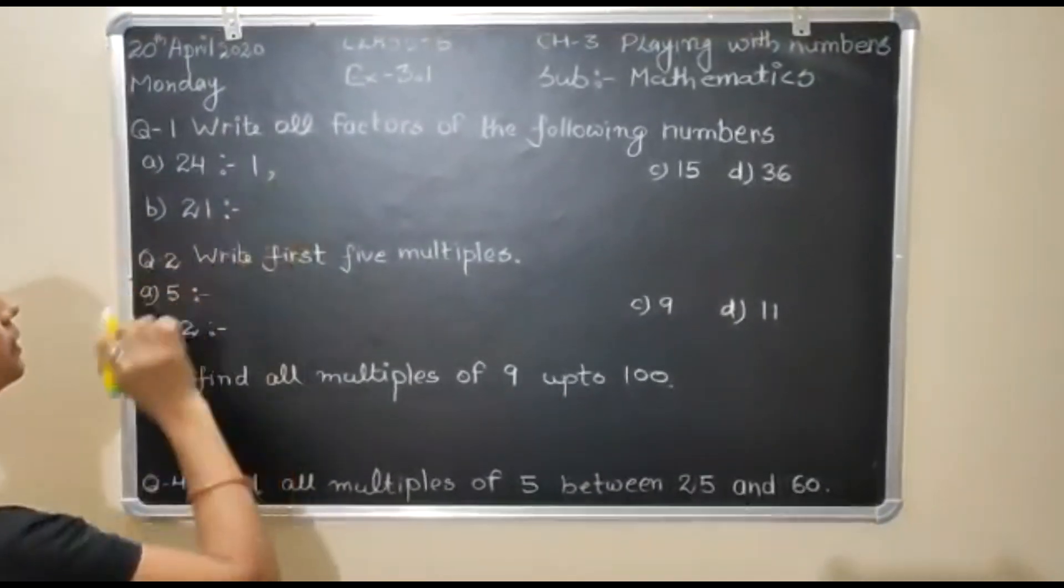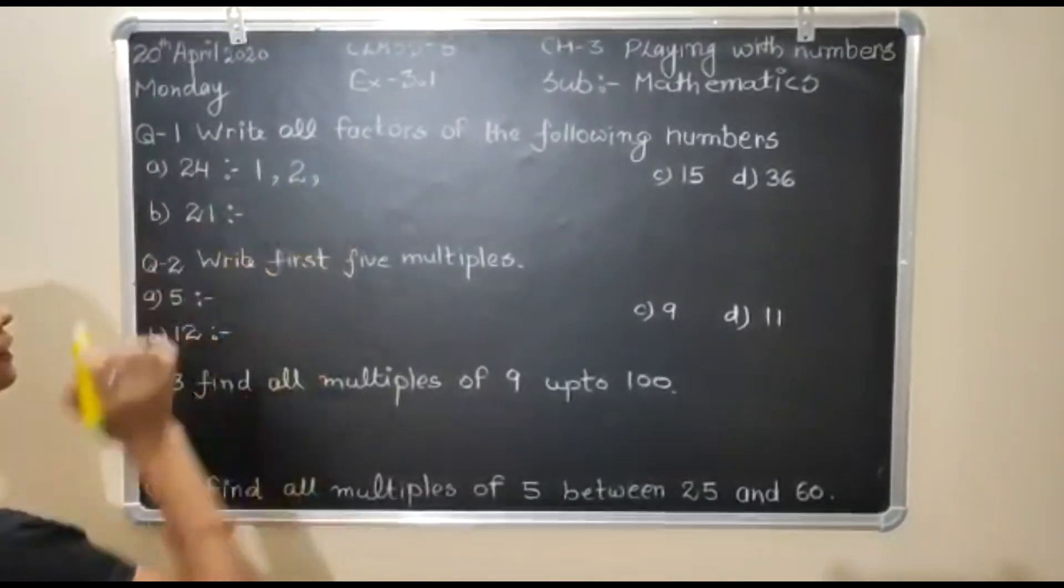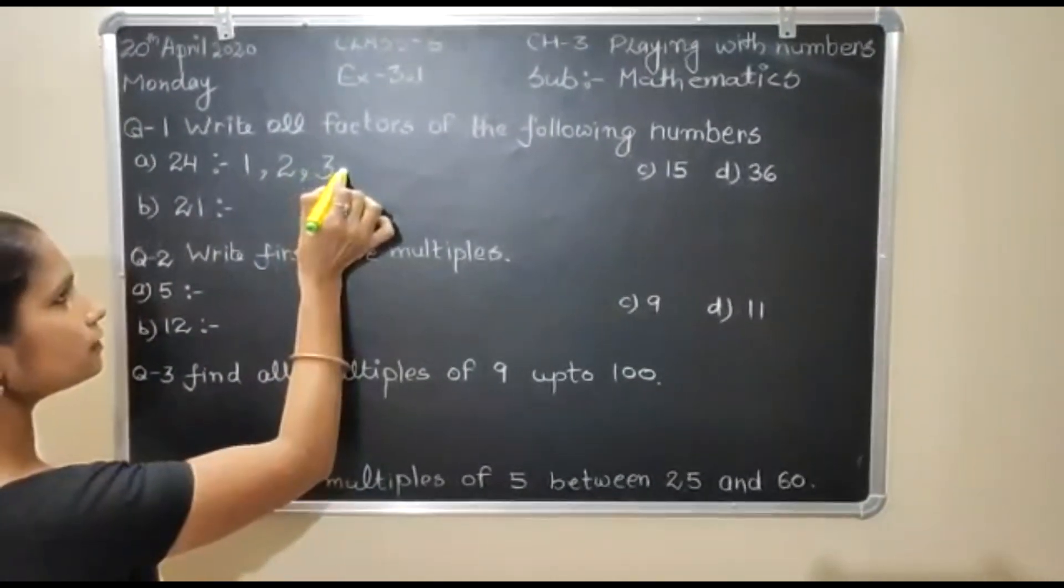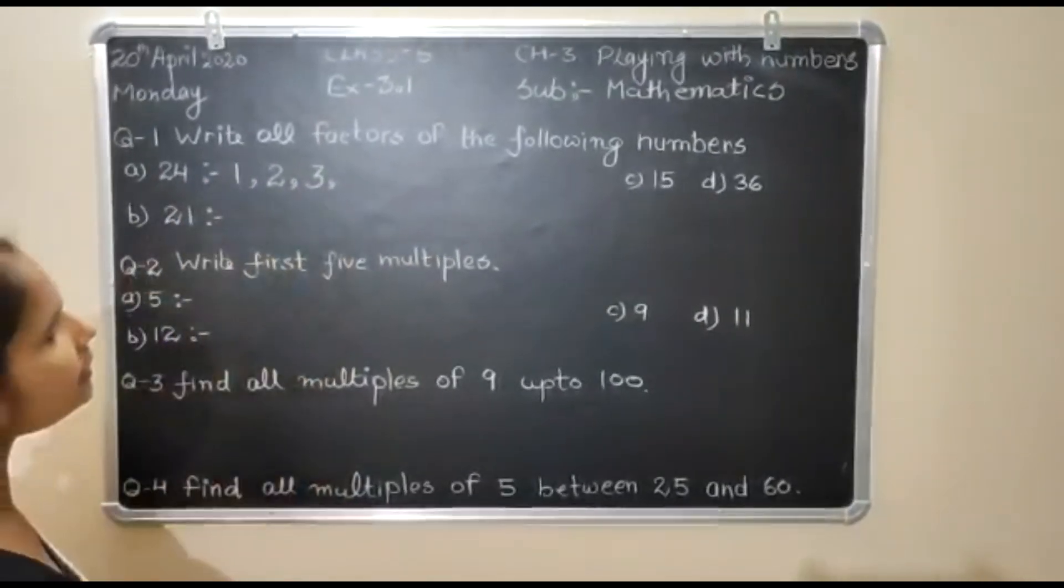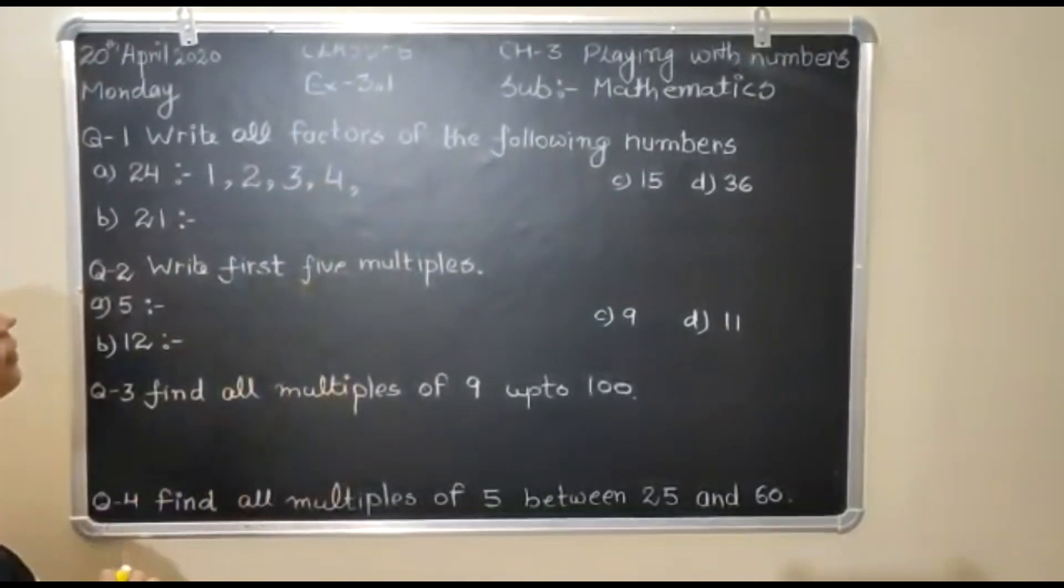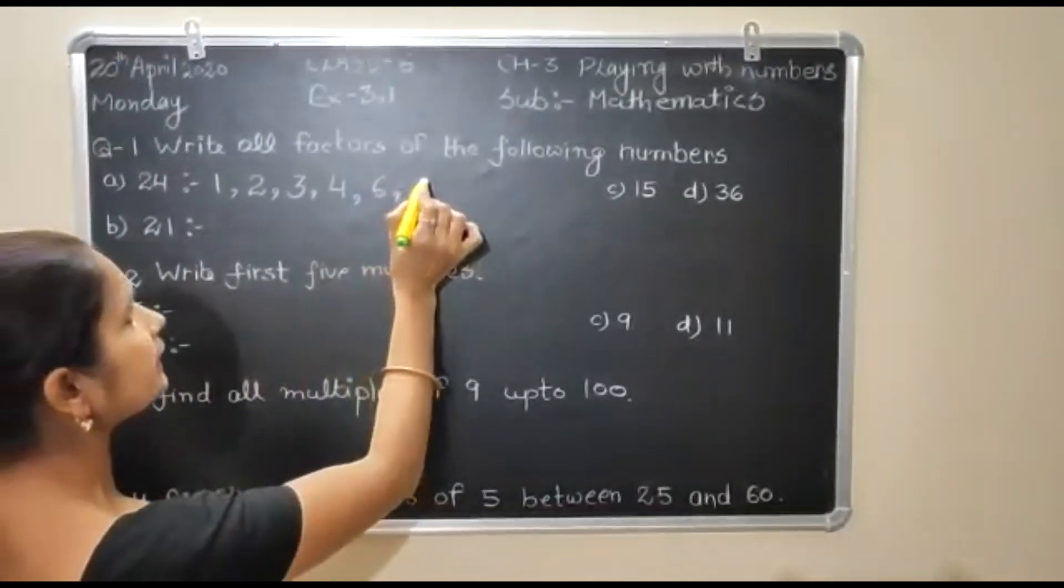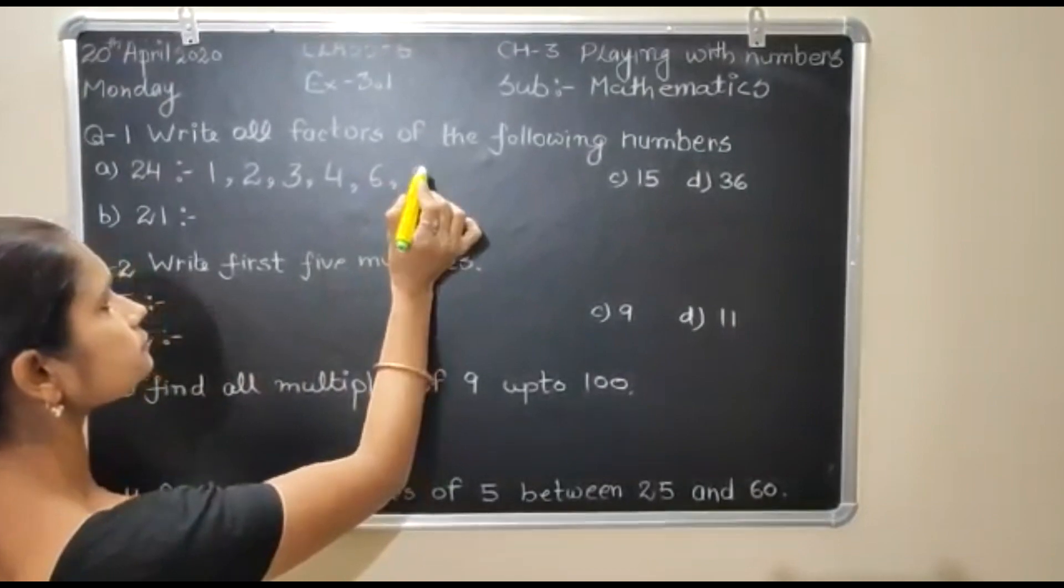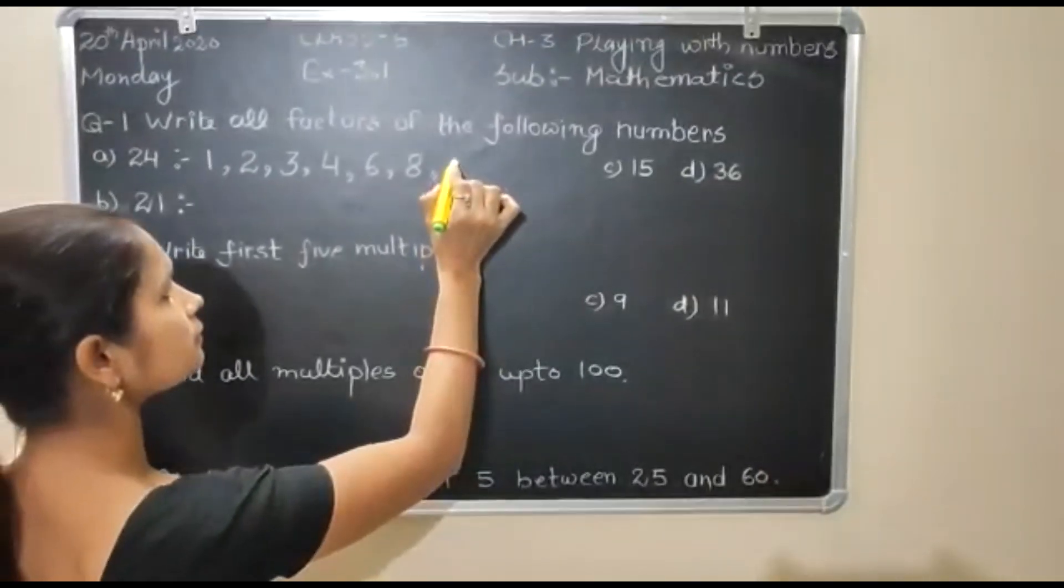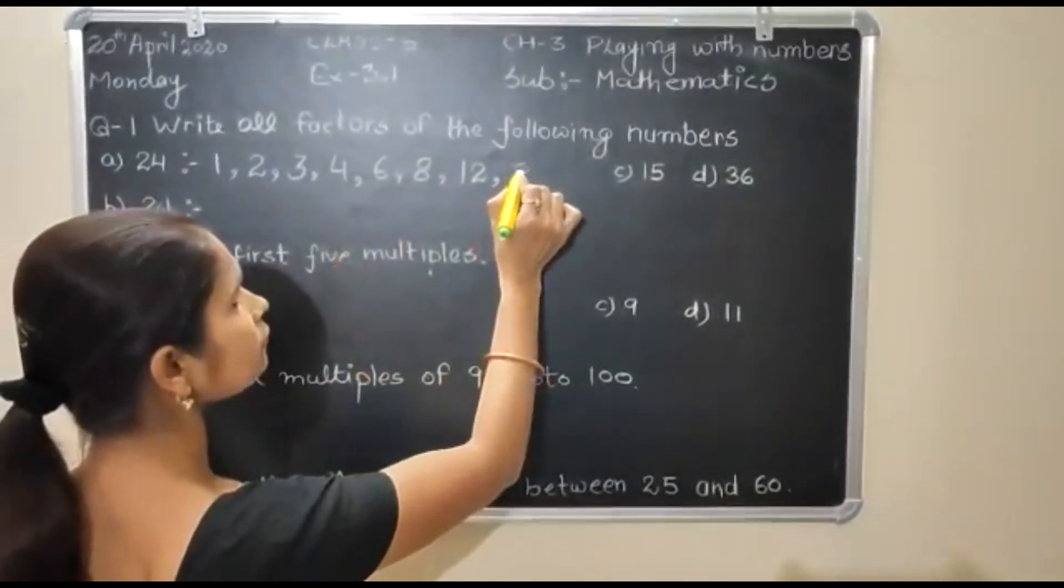After that, 24 is also divisible by 2. 2, 24 divisible by 3. It means this number comes in all the numbers. After that, 4, 6, then 8. And not divisible by 9, 10, 11, then 12, 24. And last number, 24.